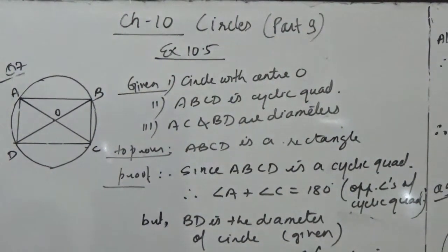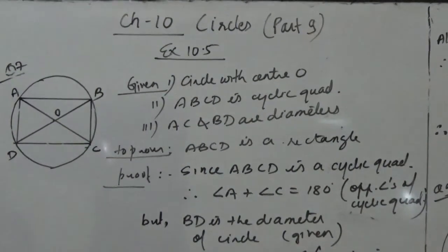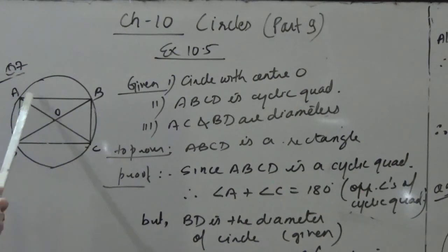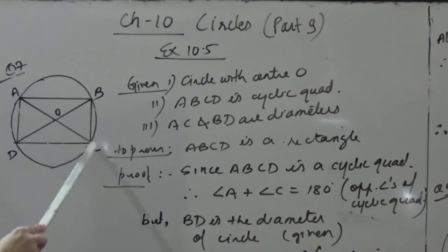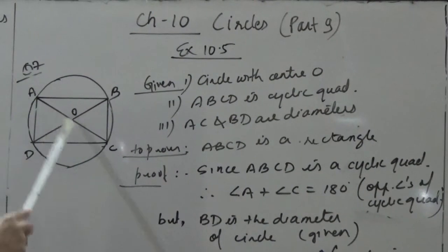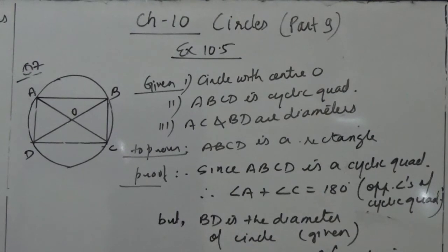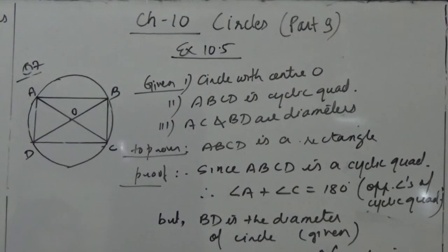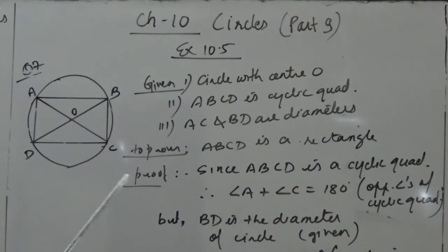In question 7, it is given that if the diagonals of the cyclic quadrilateral are diameters of the circle. Here ABCD is a cyclic quadrilateral and AC and BD are the diagonals given as diameters of the circle.